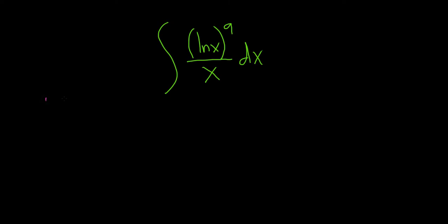We'll start by letting u be equal to the natural log of x. And the reason we do this is because we know that if we let u be equal to the inside piece here, this natural log, whenever we take the derivative...